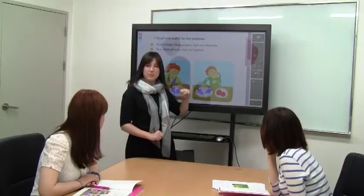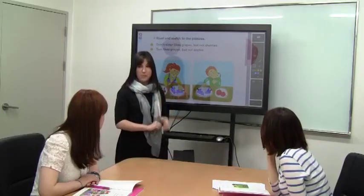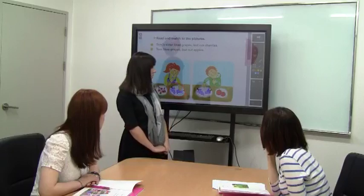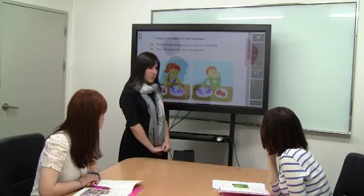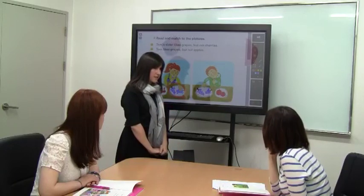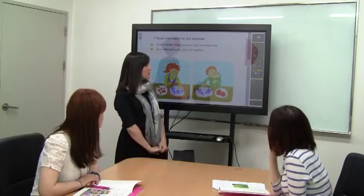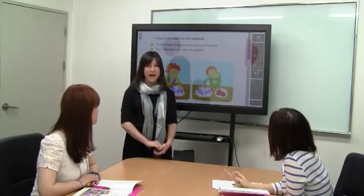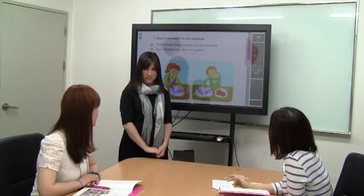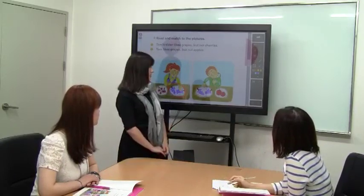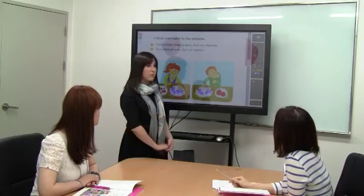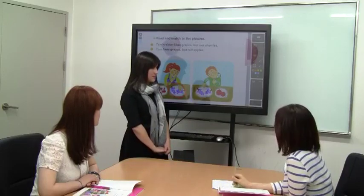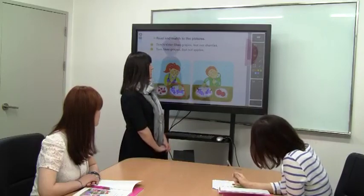Now if we look at this picture, Julie, is there a boy or a girl? A boy. And Vivian, what fruit is the boy eating? Grapes. Very good. And what fruit is he not eating, Julie? Apples. So Vivian, the boy likes grapes or apples? Grapes. Very good.